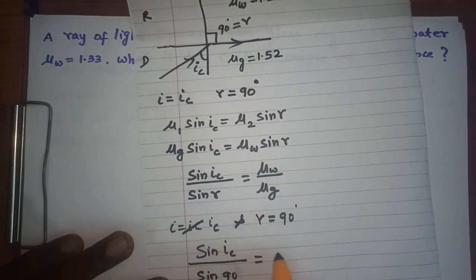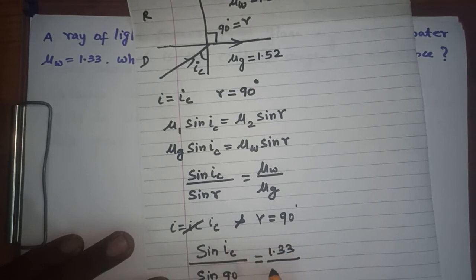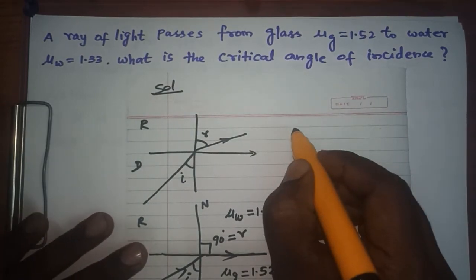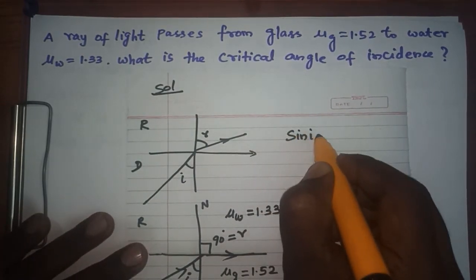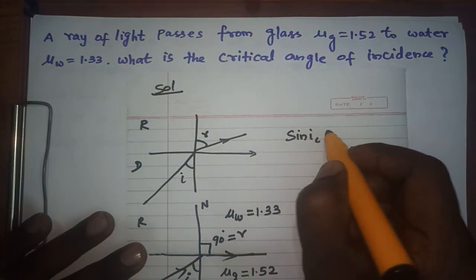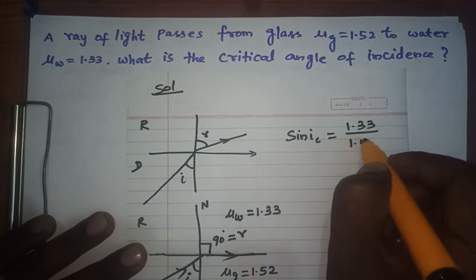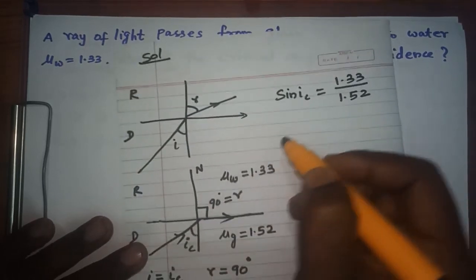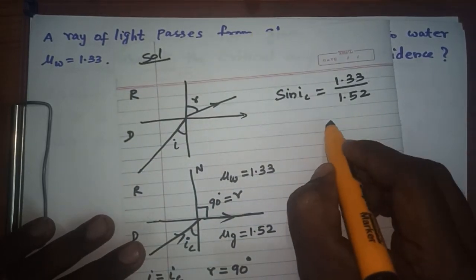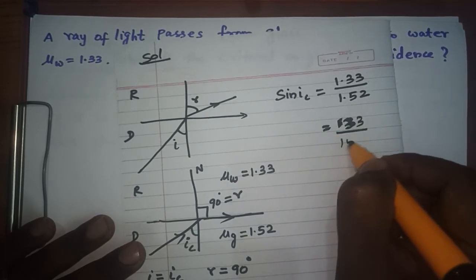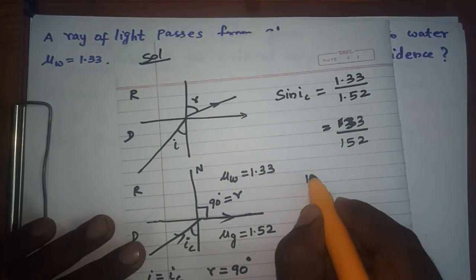I have to calculate my critical angle of incidence. Sin i_c: sin 90 becomes 1, which equals 1.33 divided by 1.52. So 1.33 divided by 1.52, that is 133 divided by 152. I have to go for my basic division.